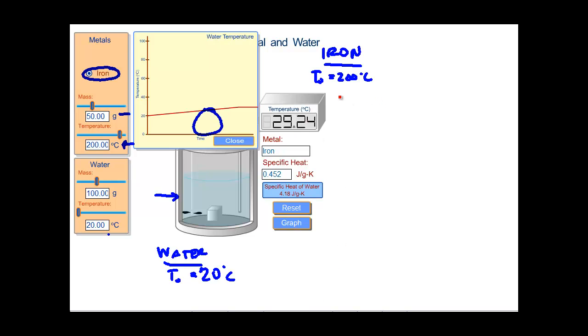So our final temperature for the iron is 29.24 degrees Celsius. And the final temperature for the water is the same thing, 29.24 degrees Celsius.